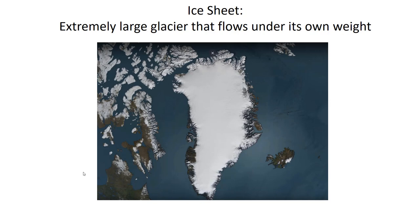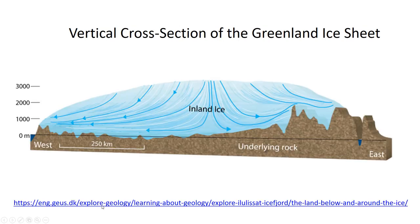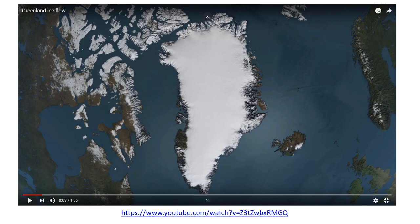An ice sheet is just an extremely large glacier — so large that it doesn't just flow because part of it is uphill from the rest; it flows under its own weight. Here is the Greenland ice sheet, and here's a cross-section of it: there are 3,000 meters of ice piled up over the central part of Greenland — that's 3 kilometers, or 2 miles of ice — forming a huge mountain basically, and that ice is flowing under its own weight outward toward the edges of Greenland. The next segment is a YouTube video made by NASA, so I'd like you to watch that segment next.